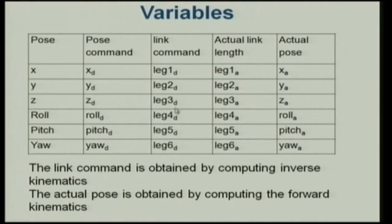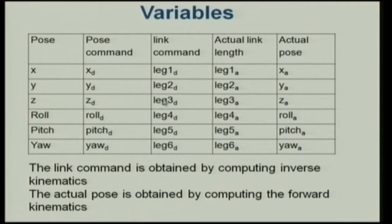I compute leg 1 desired, leg 2 desired, leg 3 desired — I have six here corresponding to six parameters. These are not a one-to-one mapping; if I change the x value, I will change perhaps all the leg values. You get a set of desired leg values.